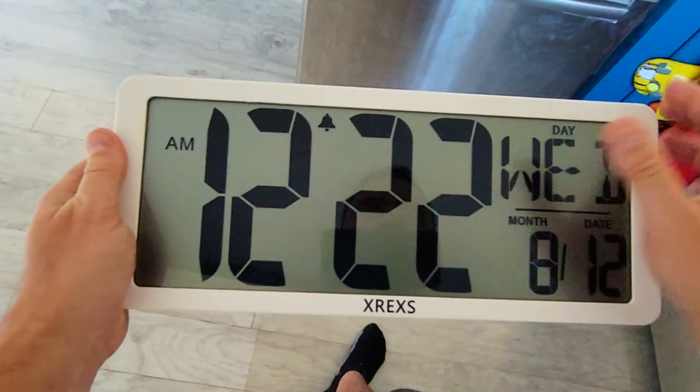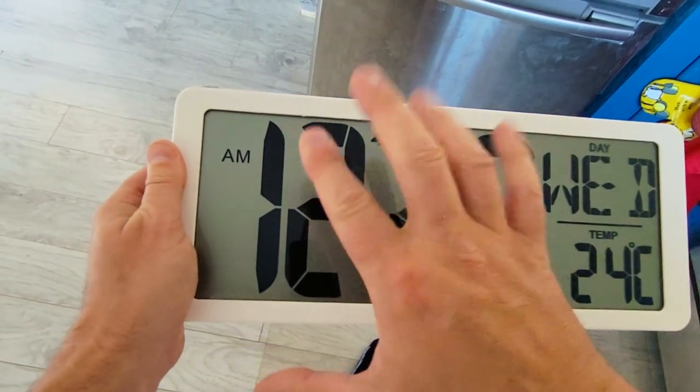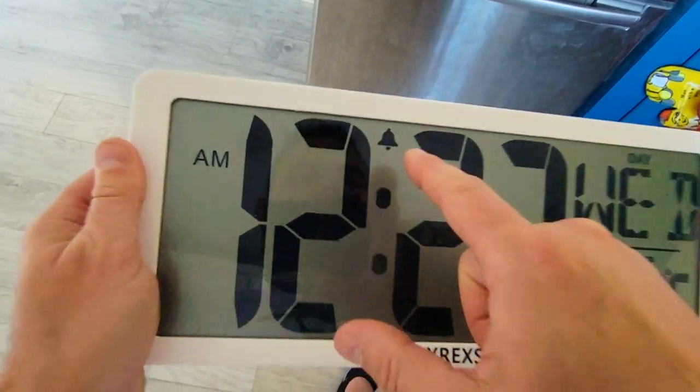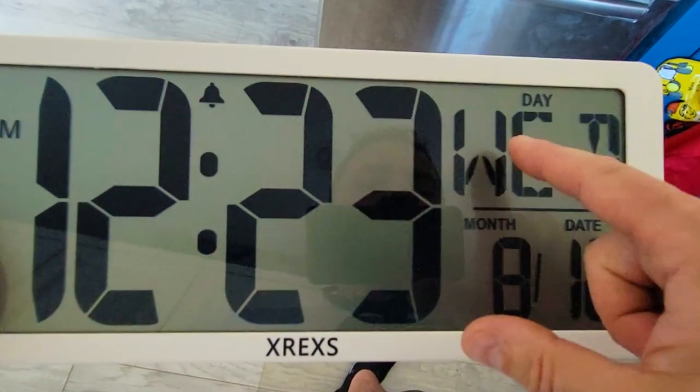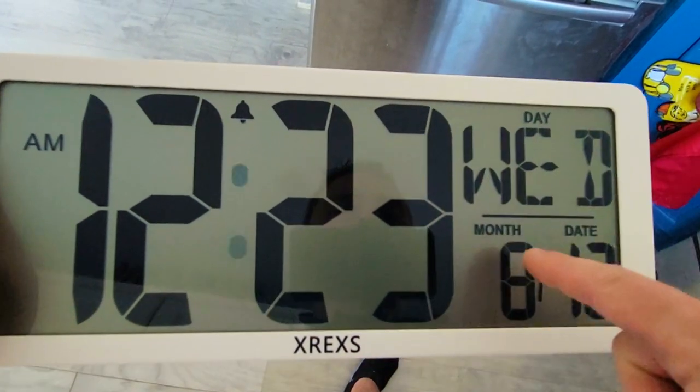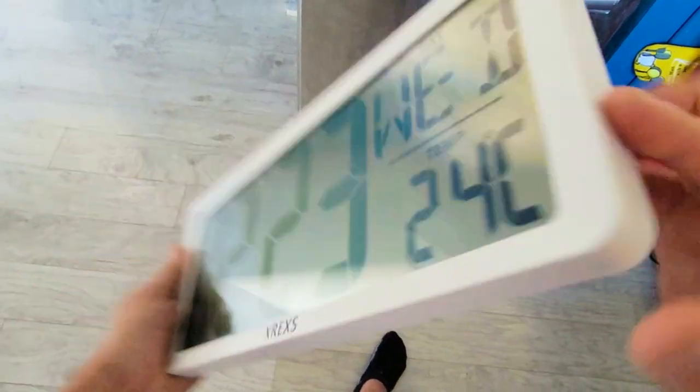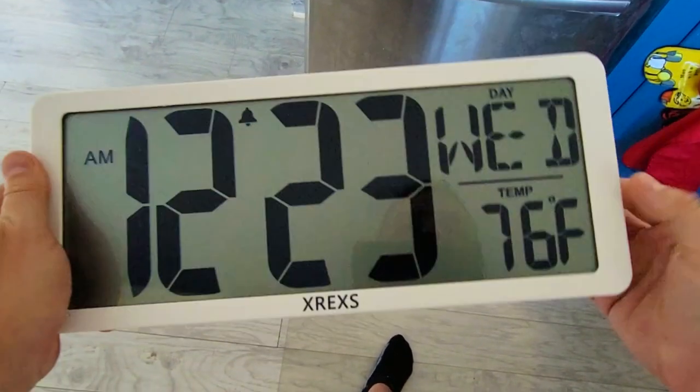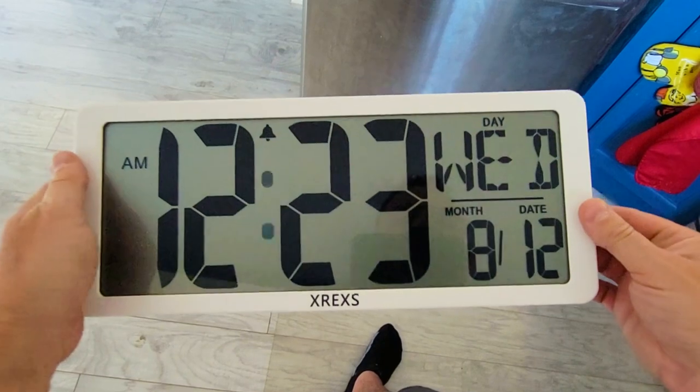All right, so when you turn on the clock, you have your hour, minute. This shows that there's an alarm. This is your AM, PM. This is your day of the day. And this is your month. This is your temperature. We can switch between Fahrenheit and Celsius, so that's cool.